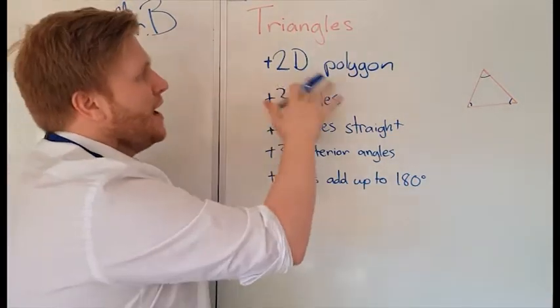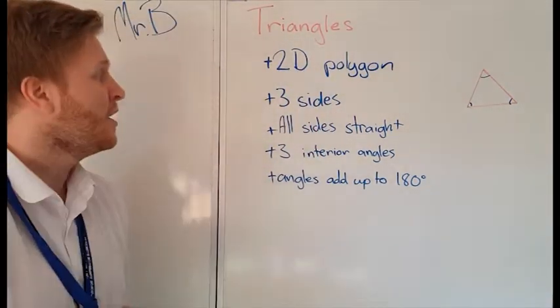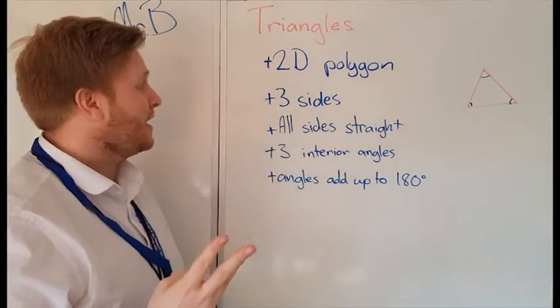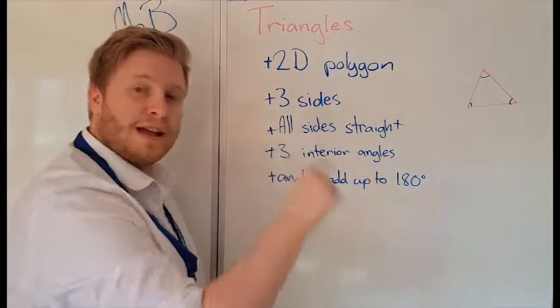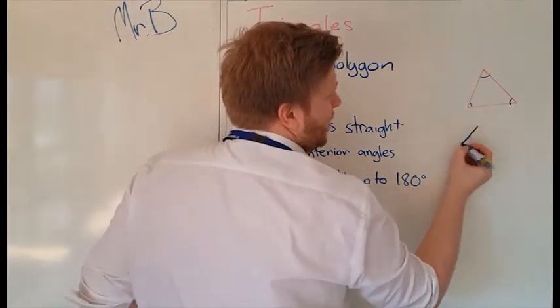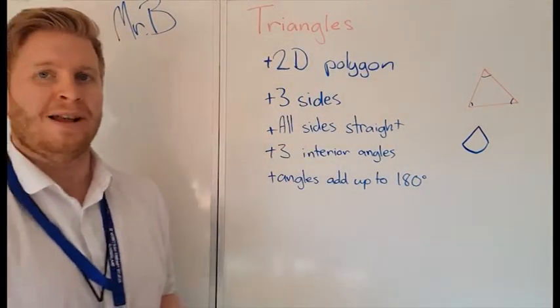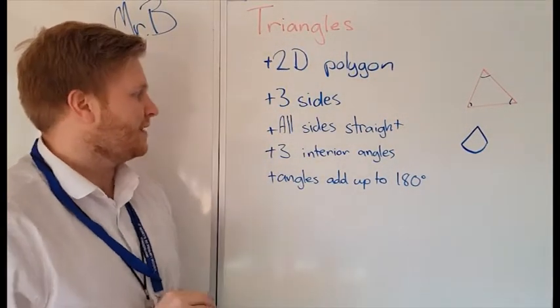So all triangles are 2D polygons and they have three sides. All the sides are straight as well, so you couldn't have a triangle with two straight sides and then a curved side. That's not a triangle, it has to have three straight sides.